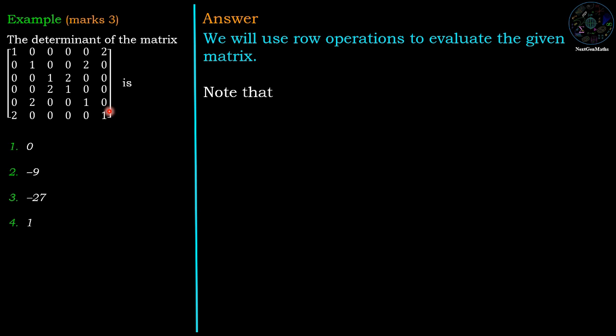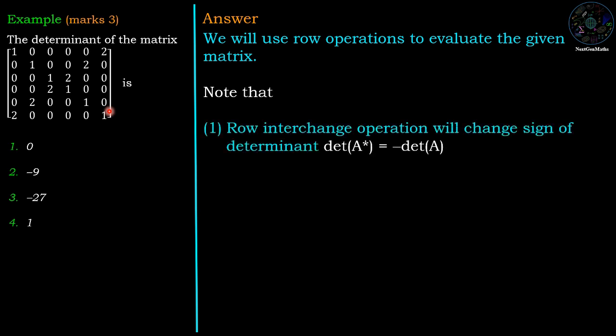Now before applying row operation, first we recall the effect of row operation on the determinant value. Basically we have three row operations. First row operation is row interchange operation. After the row interchange operation, the determinant of A star, A star is the matrix obtained after applying the row operation on A, has negative value of the determinant of A.